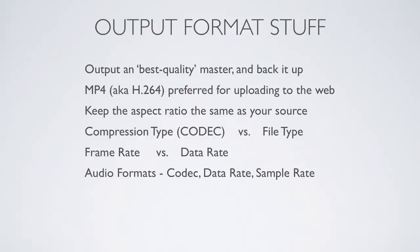First of all, output your final master in the best quality that you can, and then back up that file. If you shot at full 1080p or whatever format you're using, make a master that's the same quality as your source material. Keep that on file so you have one file to go to rather than your edit, to create something for an iPhone, Android phone, the web, or a DVD.